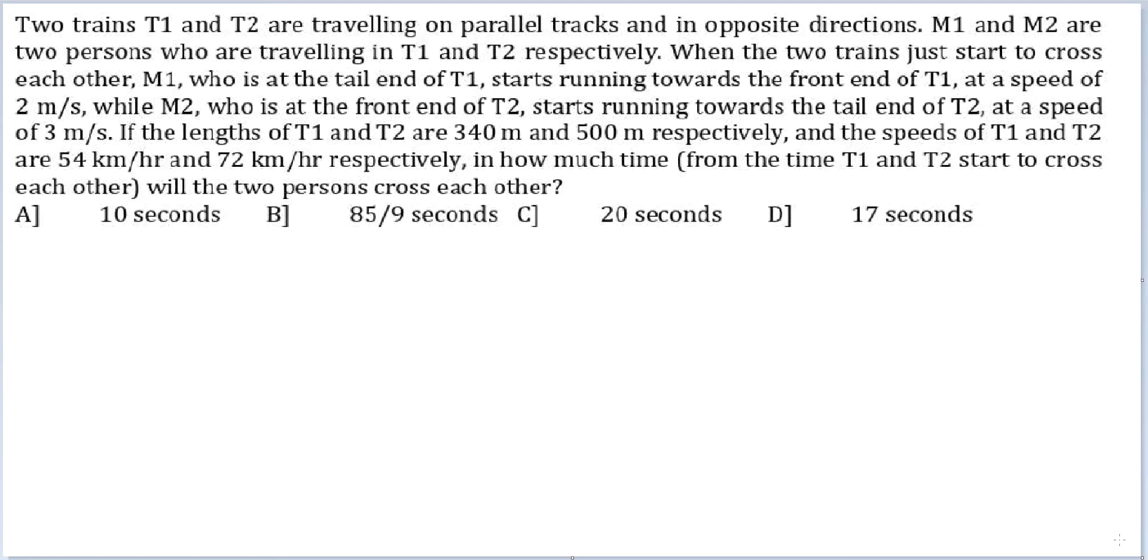Let's look at this question. Two trains T1 and T2 are travelling on parallel tracks in opposite directions. M1 and M2 are two persons who are travelling in T1 and T2 respectively. Where the two trains just start to cross each other.